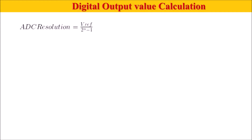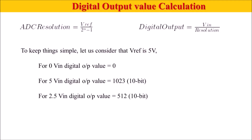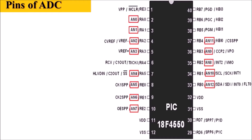The resolution of this ADC can be computed using the reference voltage: it equals V_reference divided by 2 raised to the power N minus 1, where N is the resolution — that is, 10 bits — giving V_reference divided by 1023. The digital output equals the input voltage divided by the resolution. For example, with a 5V reference, a 0V input gives output 0, a 5V input gives 1023, and a 2.5V input gives 512.